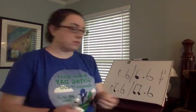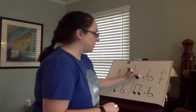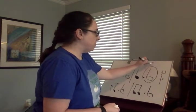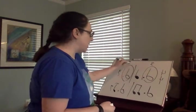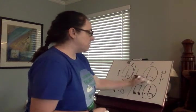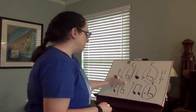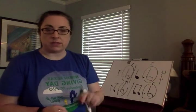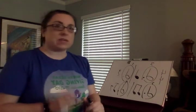Each measure has to add up to four. So if we add three beats with a dotted half note, whatever else is at the end of the measure needs to equal one beat. It can be four sixteenth notes, it can be one eighth note and two sixteenth notes — different variations — as long as the remaining beat is worth one count.